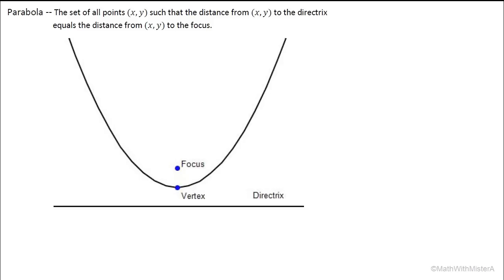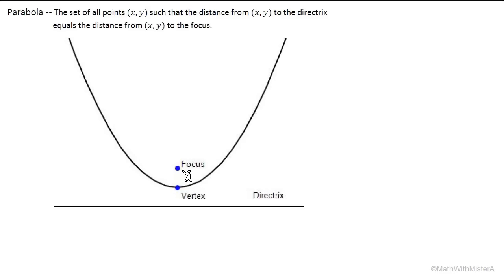The parabola is defined as the set of all points such that the distance from a point to the directrix equals the distance from the point to the focus. Here's our parabola. There is a point inside the parabola called the focus, and a line on the opposite side of the vertex called the directrix.